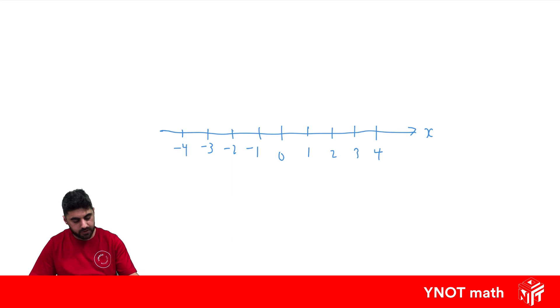The Cartesian plane has another axis going vertical and we call this the y-axis.